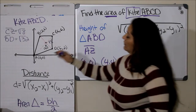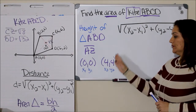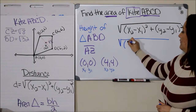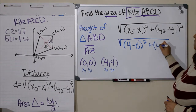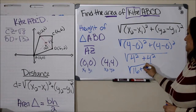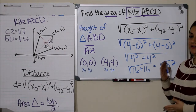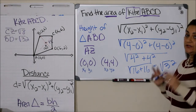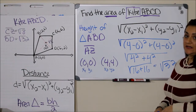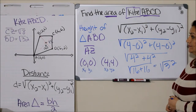Next I'm going to find the height of triangle ADB, which is from A to Z — that's zero zero and four four. Plugging those in: 4 minus 0 squared plus 4 minus 0 squared gives 4 squared plus 4 squared, which is 16 plus 16 — again the square root of 32. All of my distances are radicals rather than whole numbers, so I'm leaving them as radicals. When I find the area using base times height divided by two, they may simplify out.